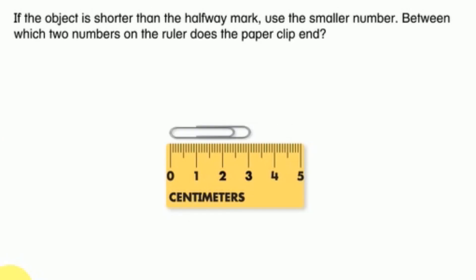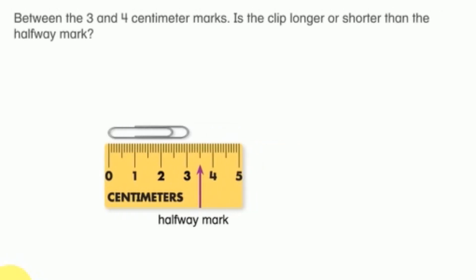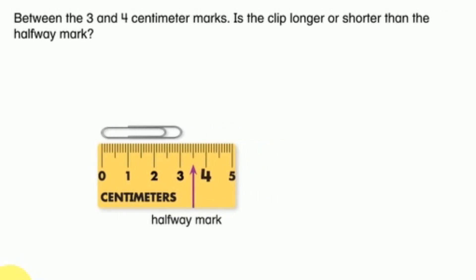If the object is shorter than the halfway mark, use the smaller number. Between which two numbers on the ruler does the paper clip end? Between the three and four centimeter marks. Is the clip longer or shorter than the halfway mark?